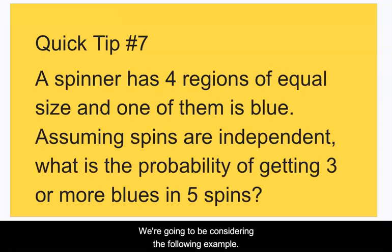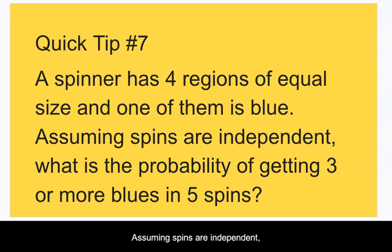We're going to be considering the following example. A spinner has four regions of equal size and one of them is blue. Assuming spins are independent, what is the probability of getting three or more blues in five spins?